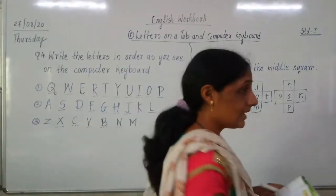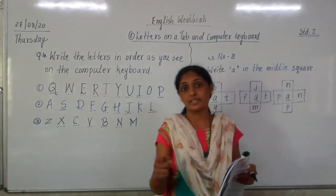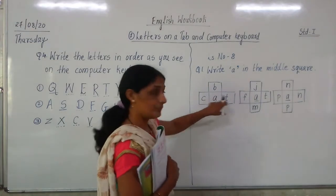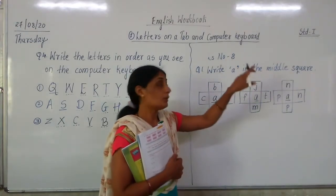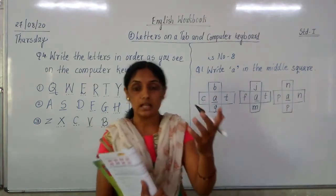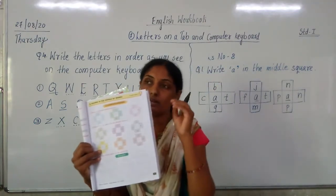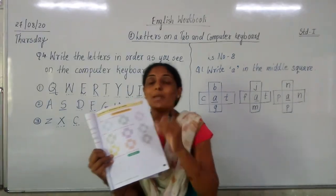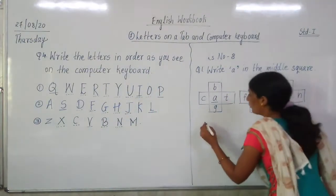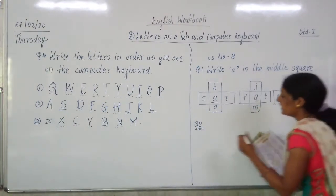Now we have to find out — E, I, O, U are what? They are vowels. Keep in mind, I have told you many times. Already A is written in these three boxes. A is also a vowel, and the remaining four vowels are given in Question 2. We have to choose the correct vowel and make meaningful words.